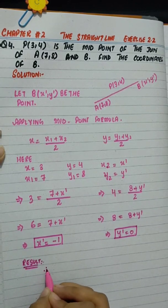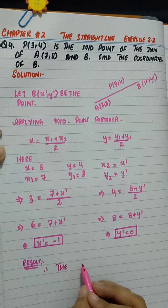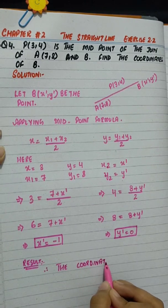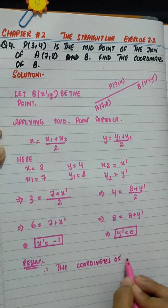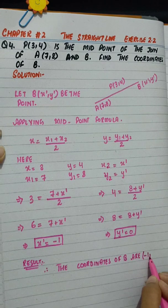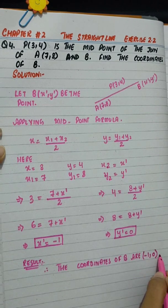Therefore, the coordinates of B are minus 1 comma 0.